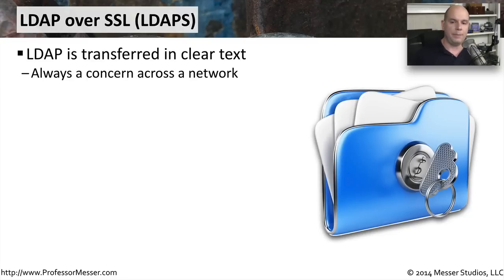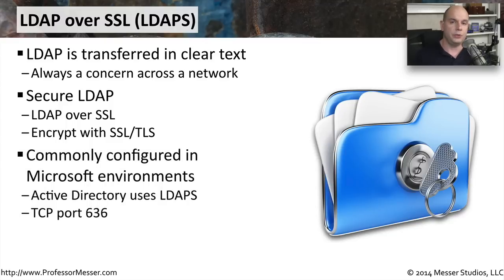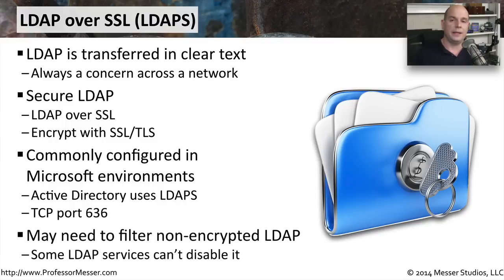Another security layer that can be added to LDAP is LDAP-S, which stands for LDAP over SSL. The LDAP protocol itself sends all information over the network in clear text, making it easy to retrieve packets and view that plain-text information. The common way to encrypt this is using LDAP over SSL — now called TLS — to encrypt information as it travels over the network. It's very common to see LDAP-S used in Microsoft environments via TCP port 636. If you have a policy restricting in-the-clear LDAP communication, you may want to firewall port 389 so that only LDAP-S over TCP port 636 is used.